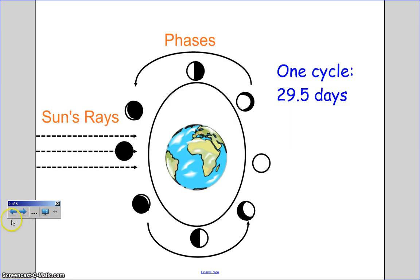Here is a diagram that shows all of the different phases. As the moon revolves around the Earth, people will see different phases in a cycle. The cycle takes about 29.5 days, so about a month.